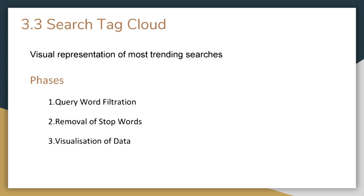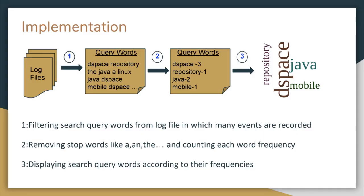It is implemented in three phases: query word filtration, removal of stop words, and visualization of data. All the actions of the users are stored in log files in DSpace. From the log files, we have to extract the search queries. For that, we give the log files to the log parser. The log parser parses the log files and it extracts the search queries.